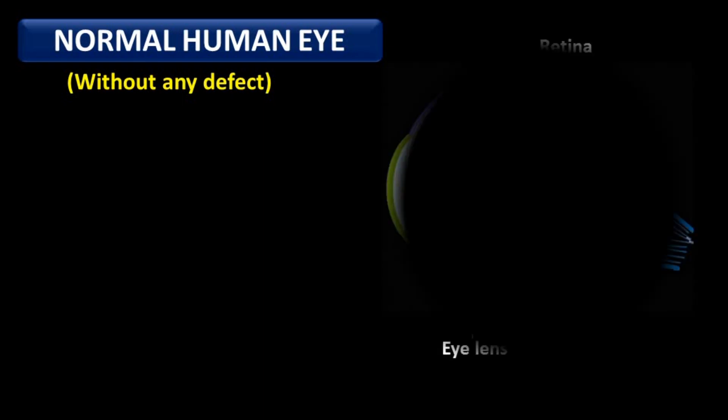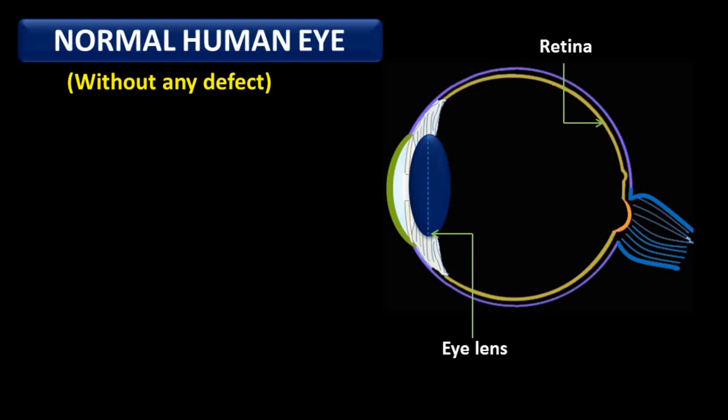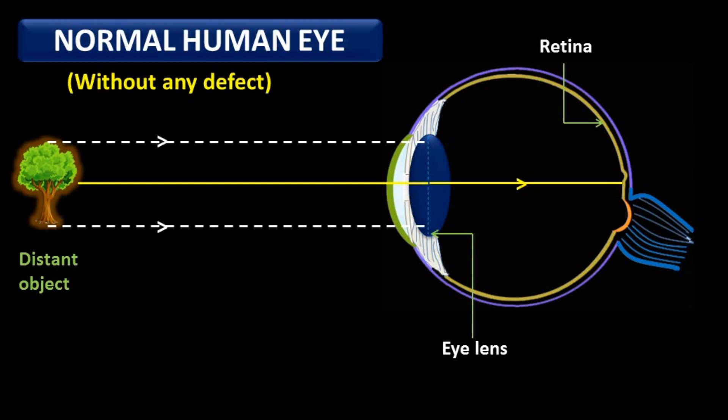A normal human eye, meaning without any defect — the retina and eye lens are the most important parts. Their function and structure we already learned in the previous topic. When rays come from a distant object, these rays are parallel to each other and parallel to the principal axis. This central line acts like a principal axis and passes through the optical center of the eye lens.